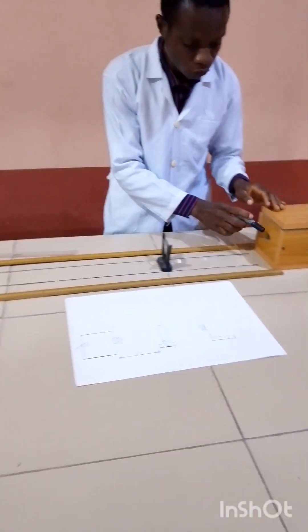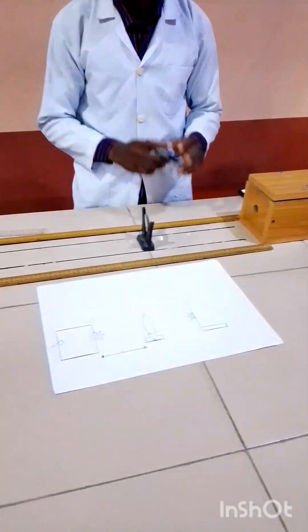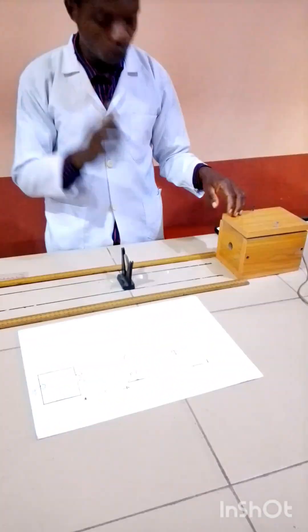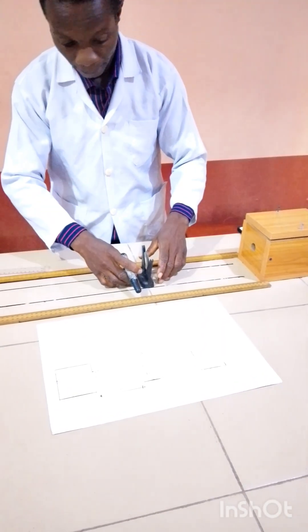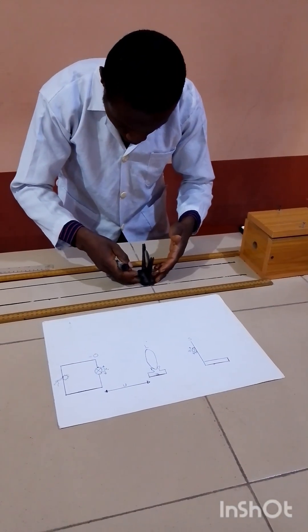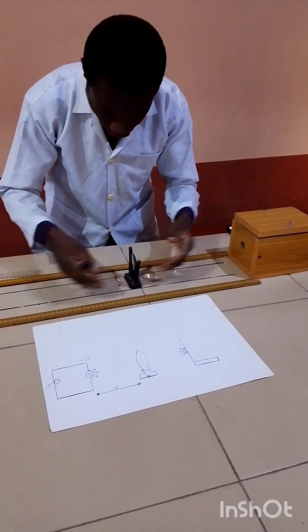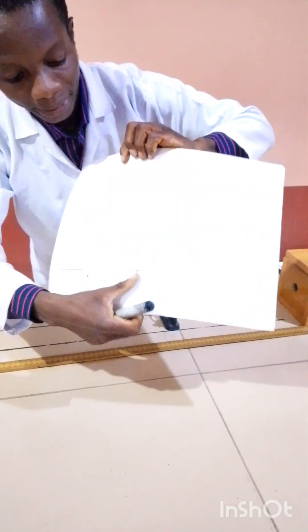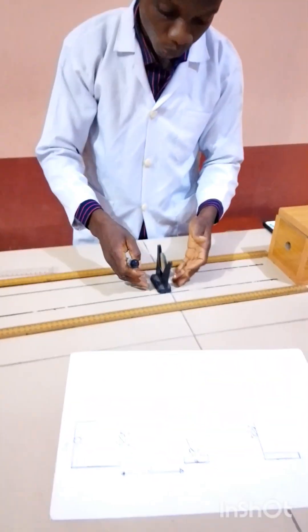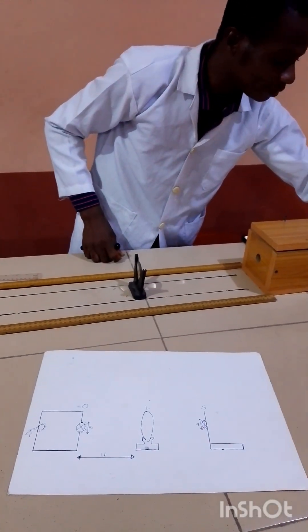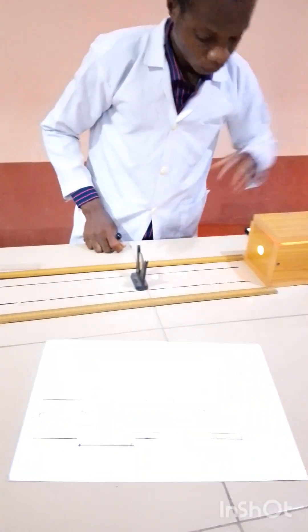We have to set U equals 30 cm for a start. That's the first thing we are going to do. The value for U is the distance between the ray box and the lens. We set it at 30, U equals 30. You can see that U is 30, the distance between the ray box and the lens. Now, I'm going to switch on the light. You can see the light is on.